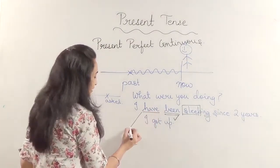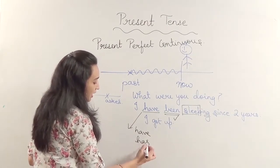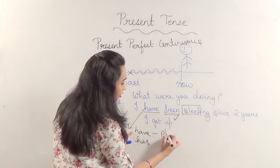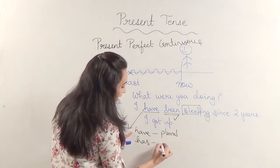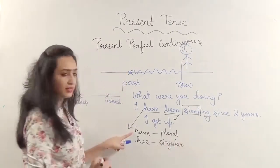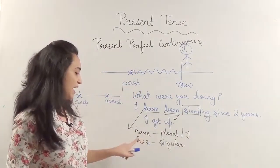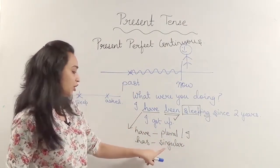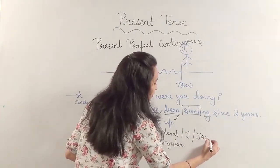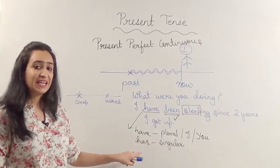This have will either be have or it will be has. He has, we have, so have is used for many things and has is used for singular things except I. So I say I have, they have, we have, you have, and we say she has, he has, it has.